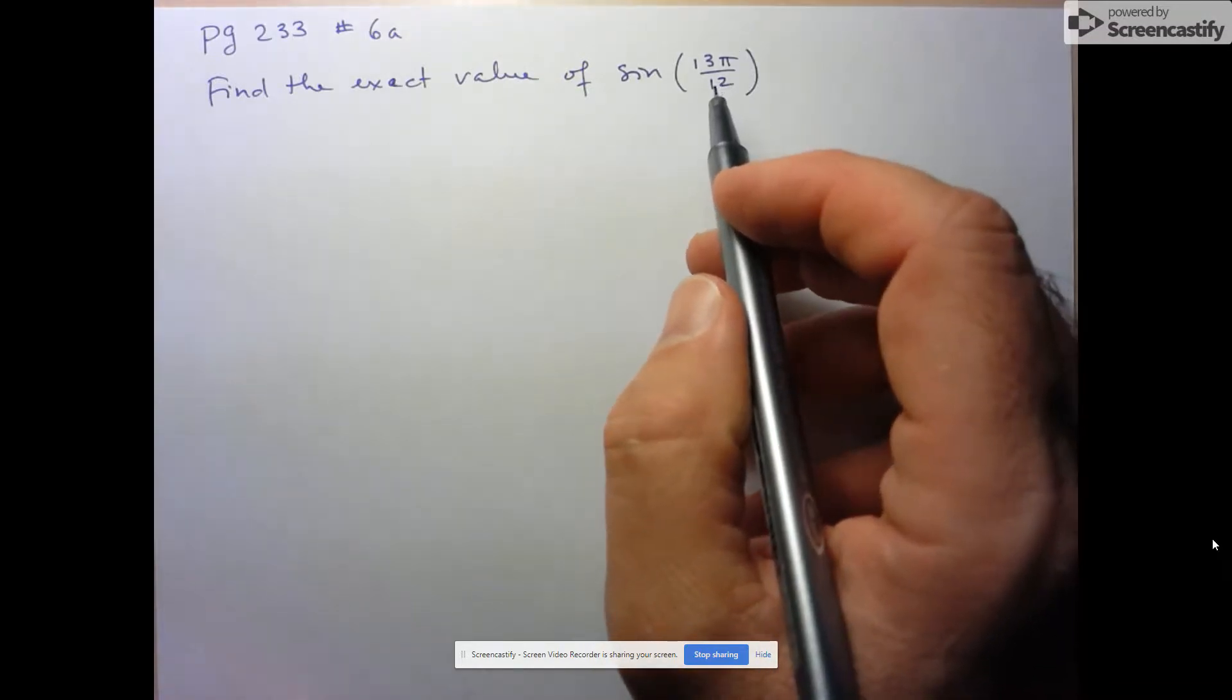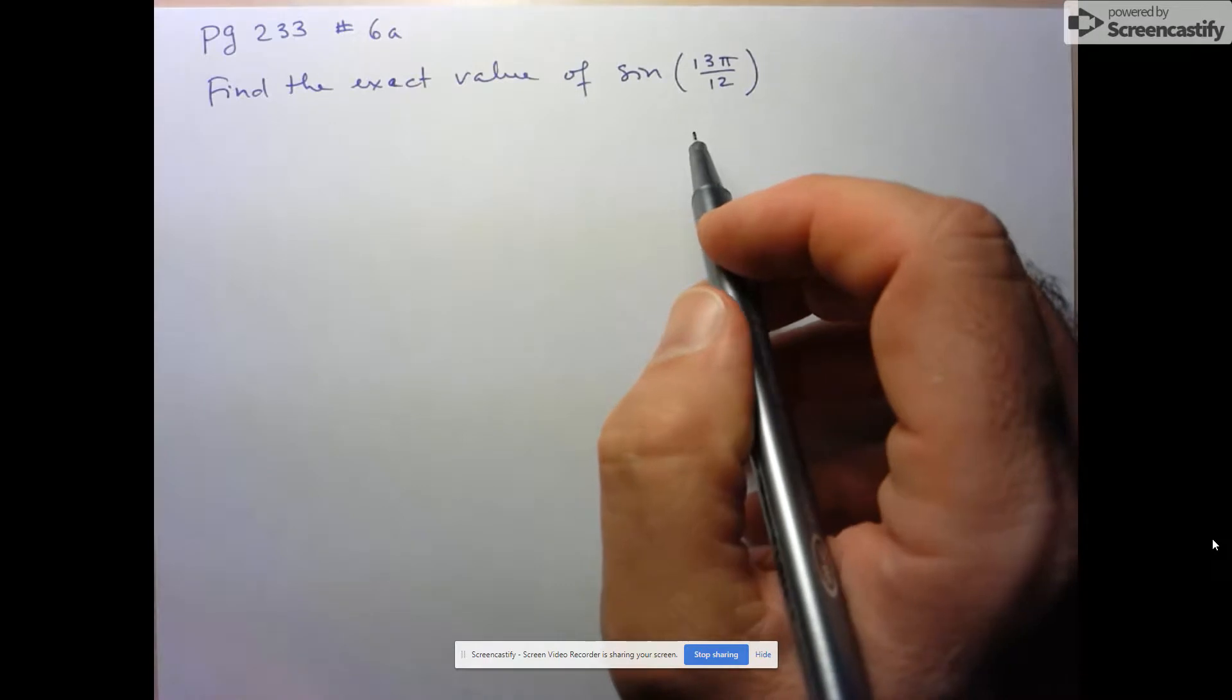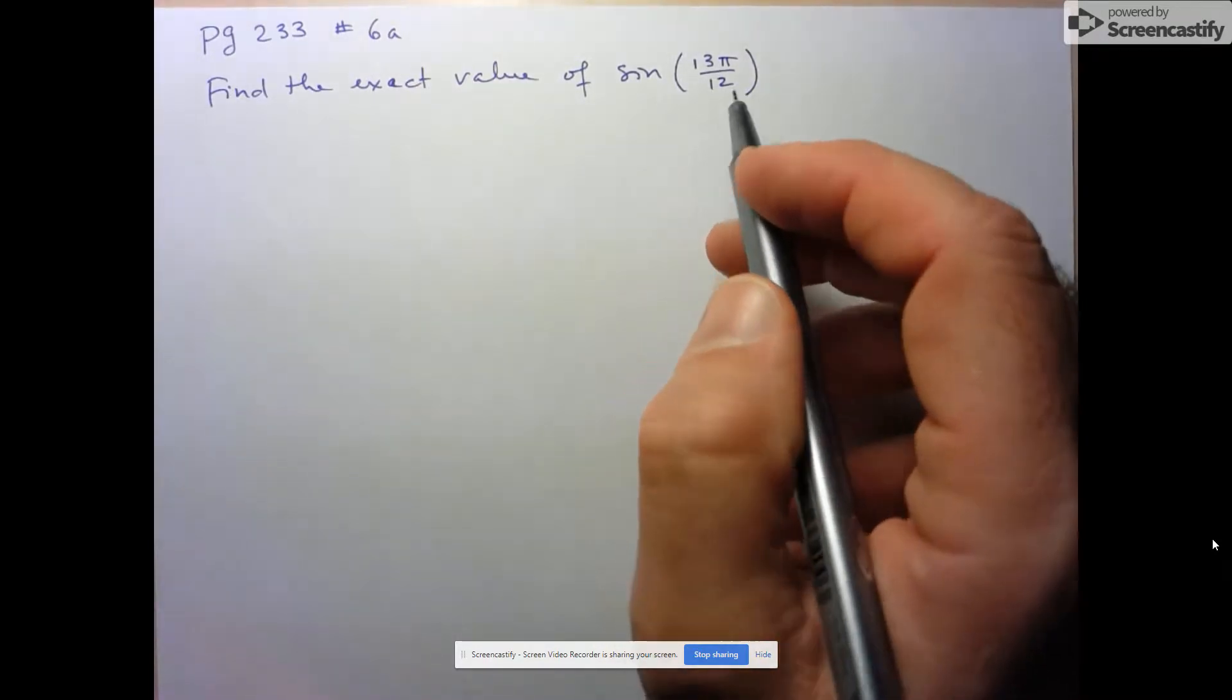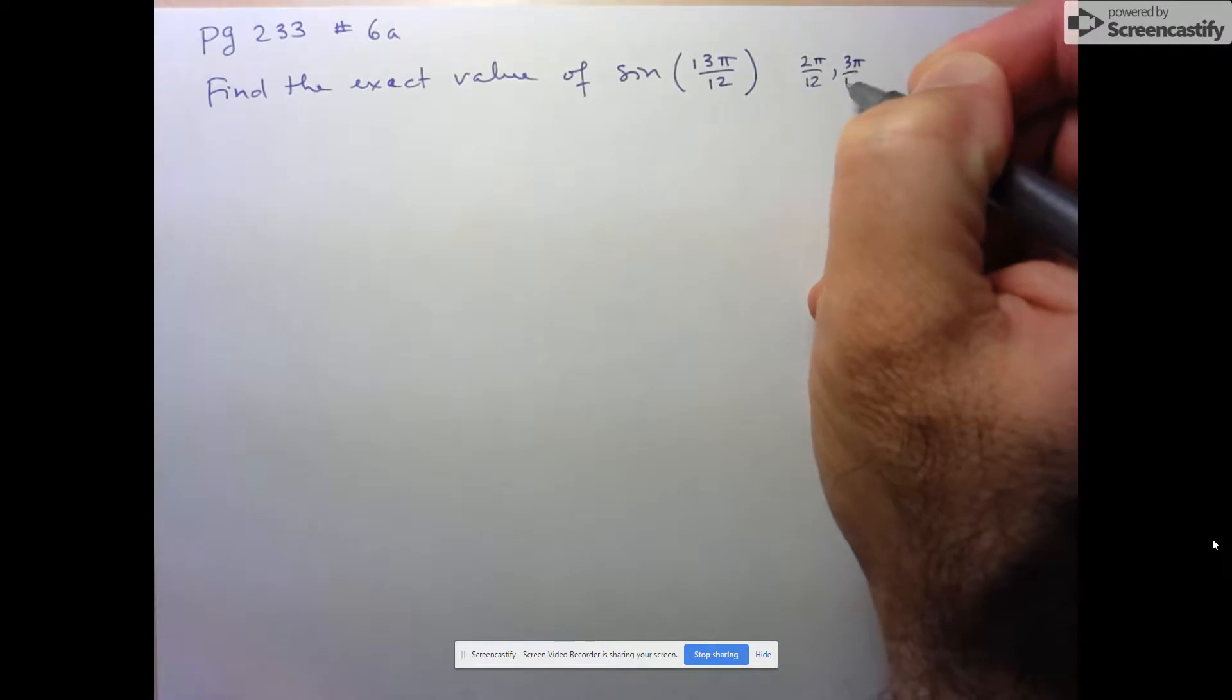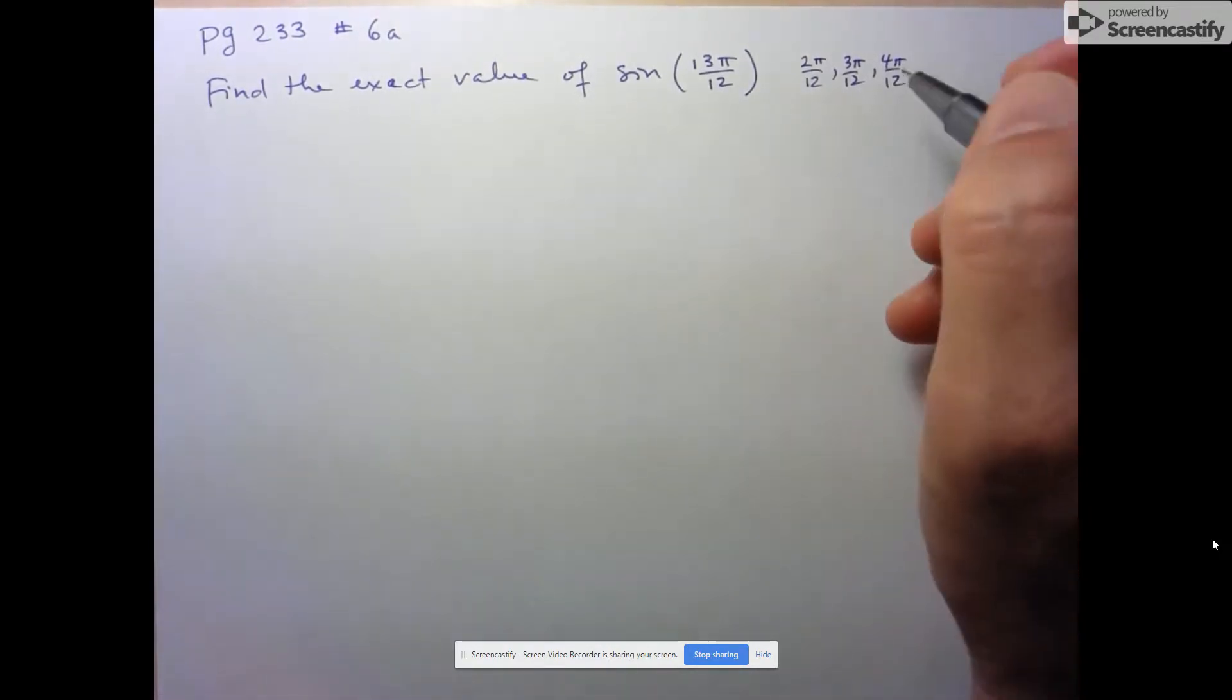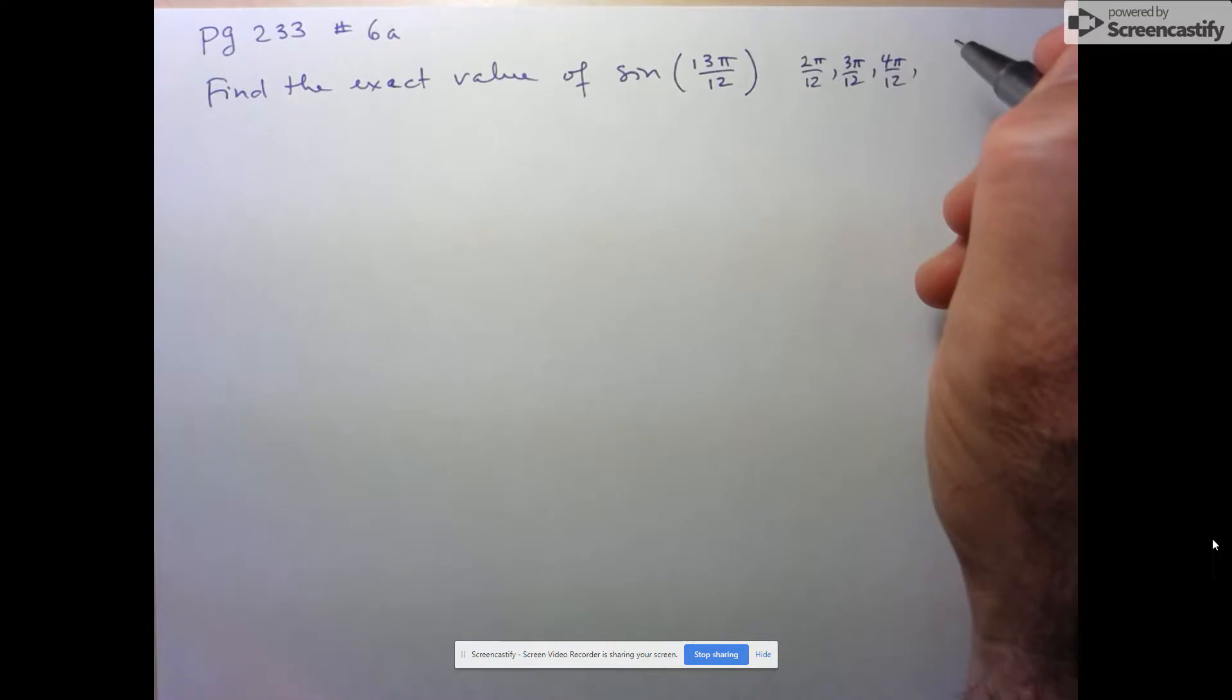When I try to determine special angles that are going to add or subtract to 13π over 12, I try to work with the same denominators I have here. So I'm not going to think of π over 6, I'm going to think of 2π over 12, 3π over 12, and 4π over 12. These are basic special angles: π over 6, π over 4, π over 3. But clearly no two of these are going to add up to 13, so I'm going to have to keep going.